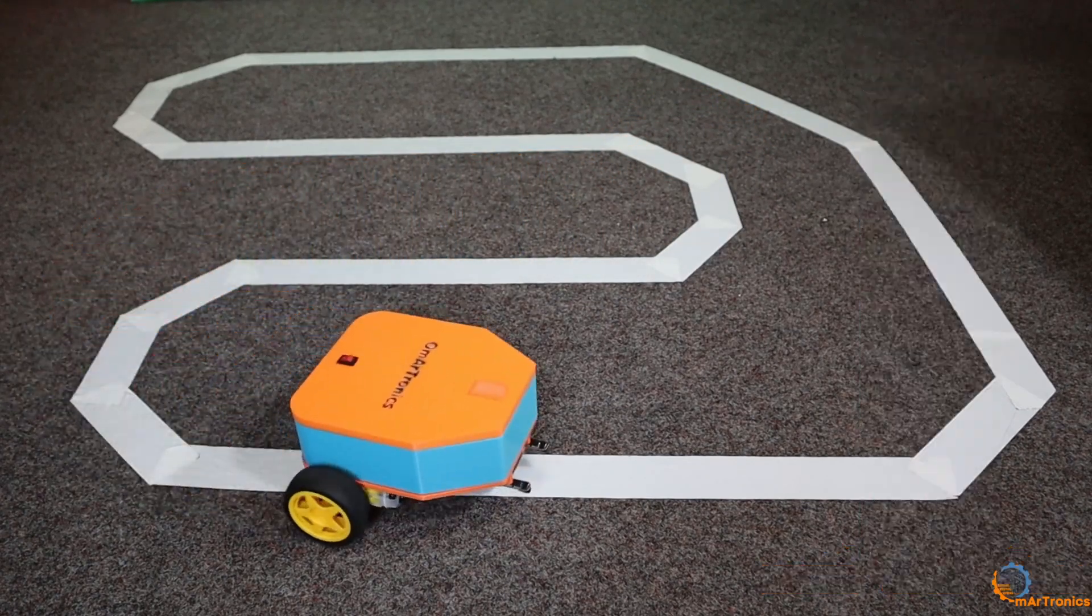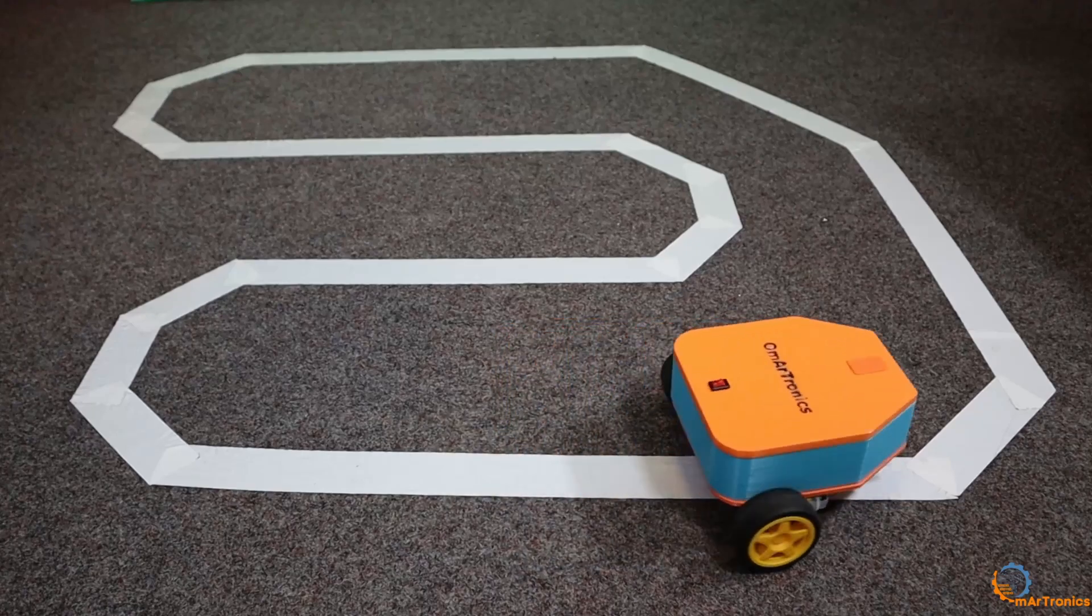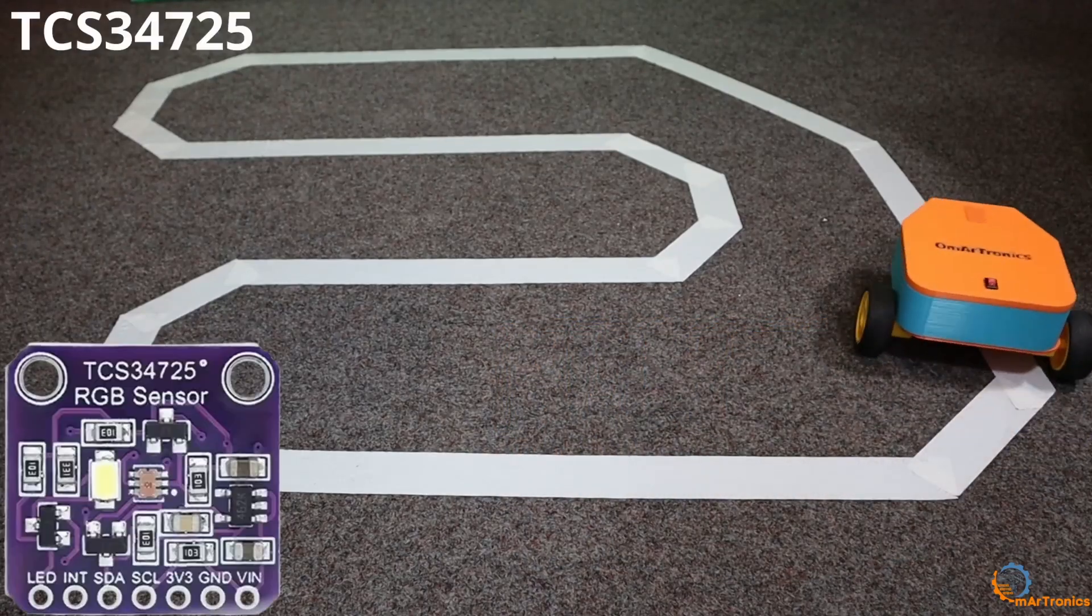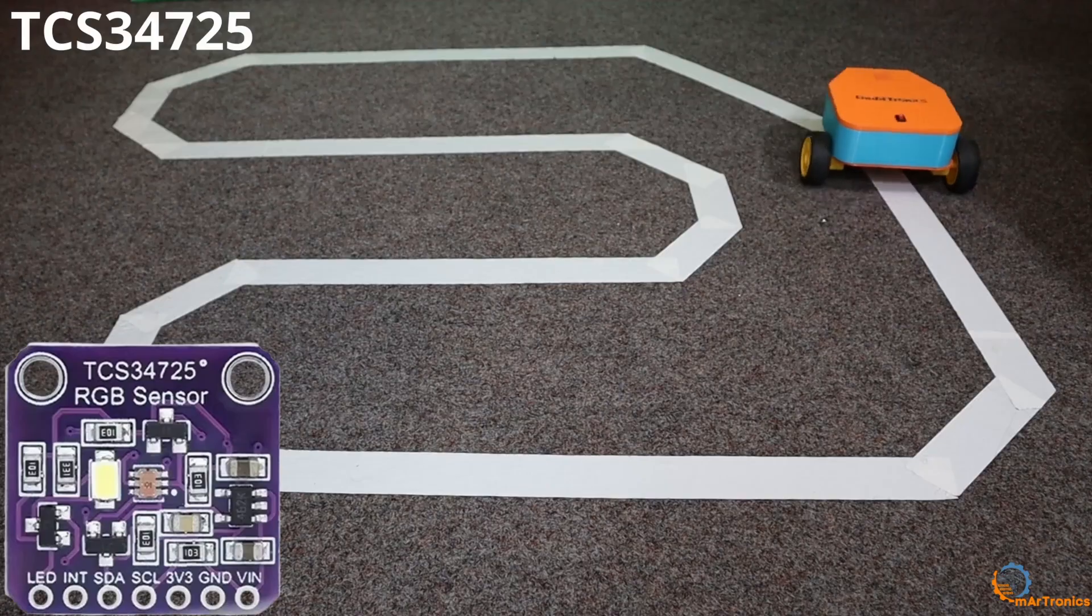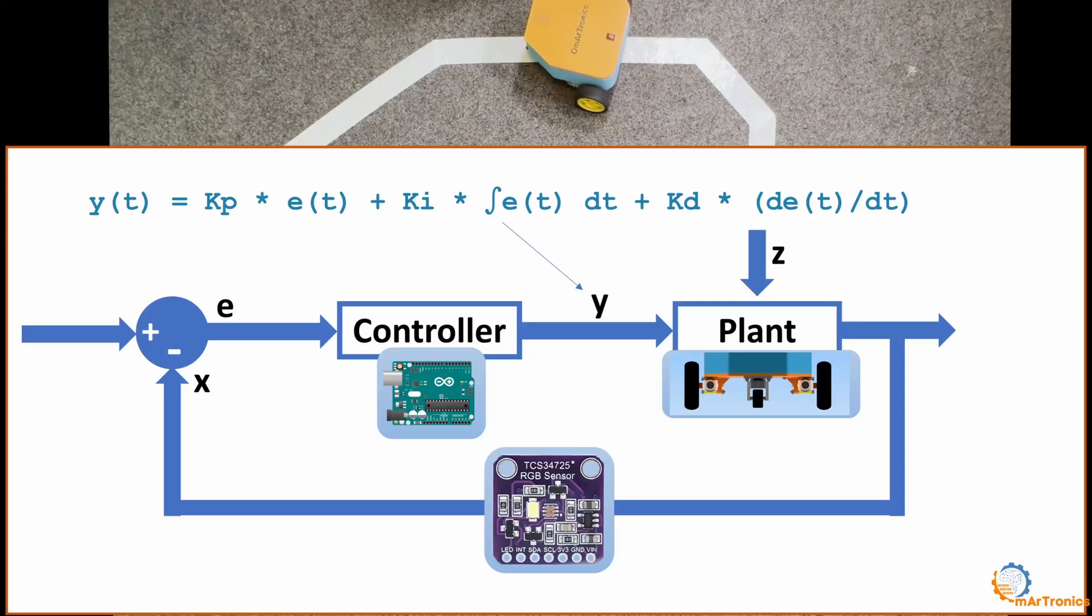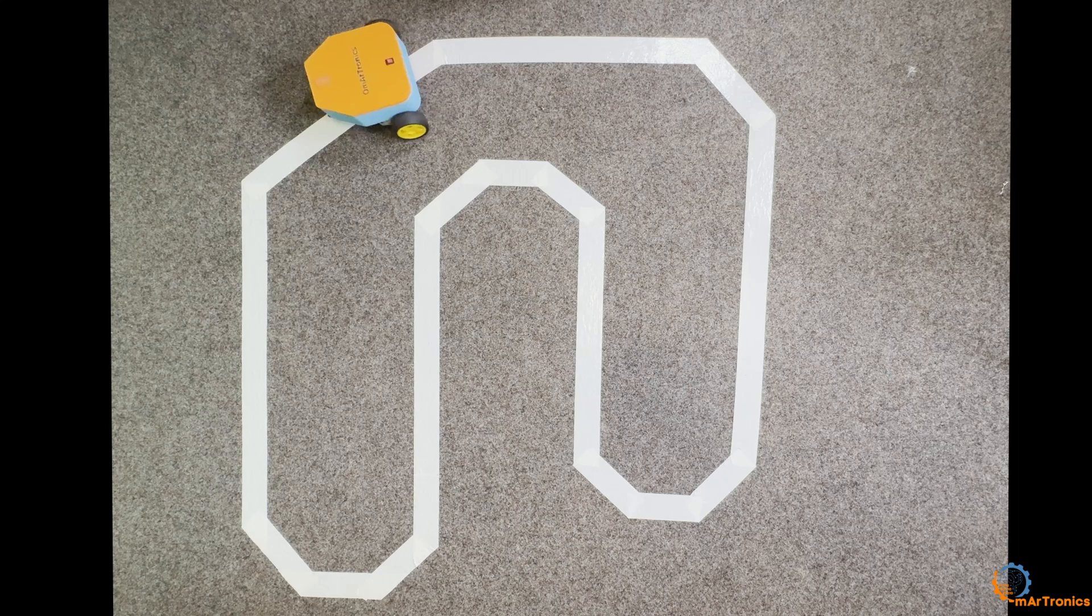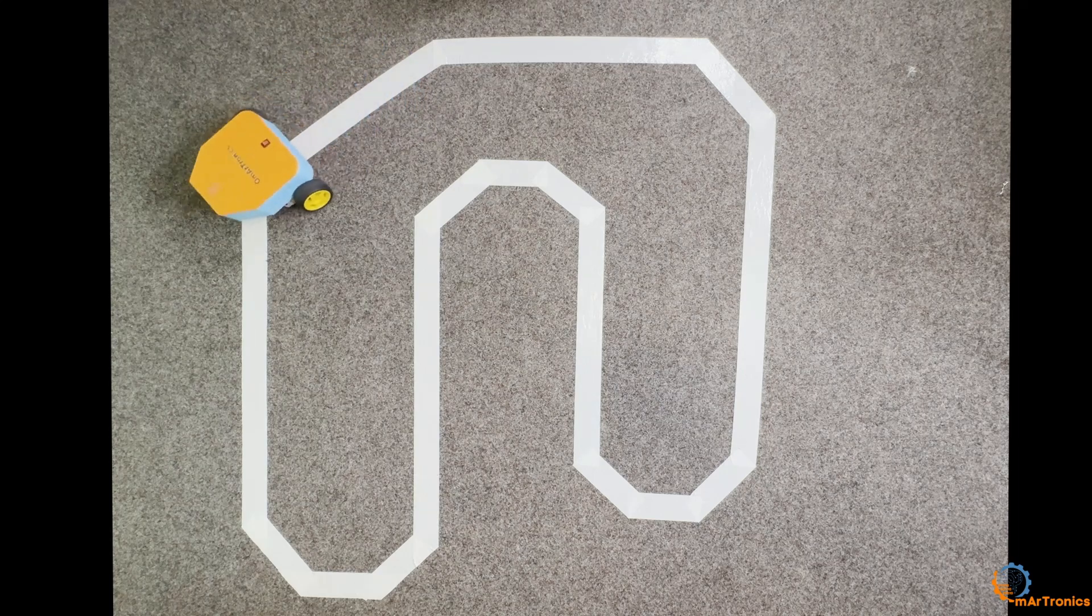The second part will be explained in the next video, where we will use the TCS34725 RGB color sensor and one of the most important control principles, PID control, where the output is measured compared to the input and the error is corrected to achieve better line tracking.